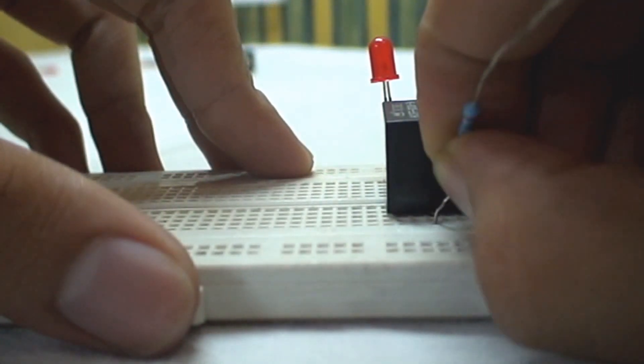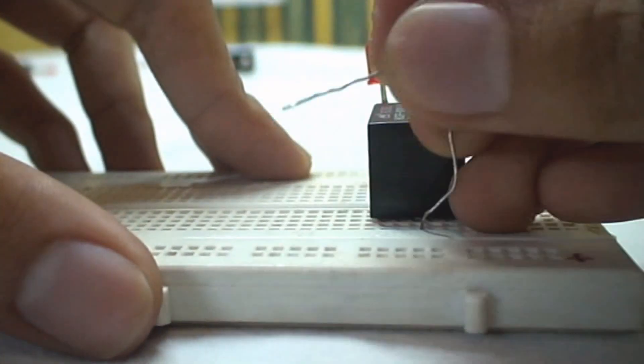Next we take the 10k ohm resistor. We connect it from the movable contact of the relay to the positive rail of the breadboard.